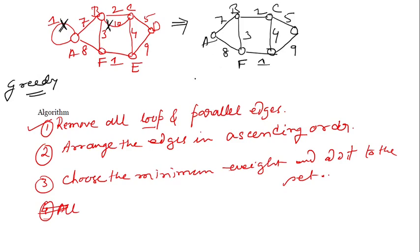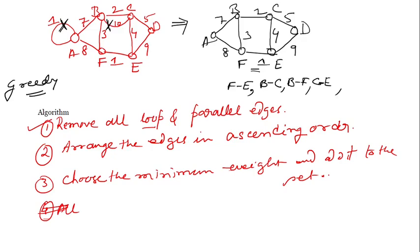Now arrange the edges in ascending order. The minimum edge is FE with weight 1. Then BC with weight 2, then BF with weight 3, then CE with weight 4, then CD with weight 5, then AB with weight 7, then AF with weight 8, and finally ED with weight 9.